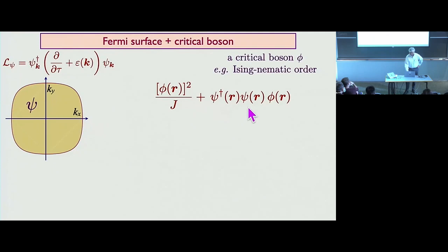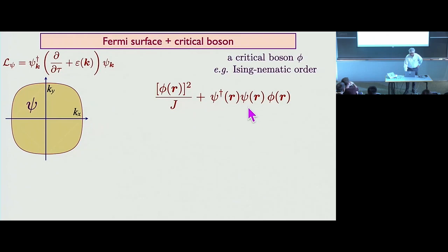I'm just saving some space by not writing down form factors. You can study this theory in some kind of Eliashberg-type self-consistent approach, where sigma is the fermion Green's function self-energy and pi is the boson self-energy.